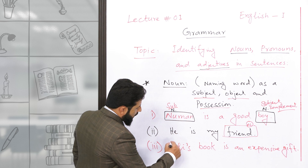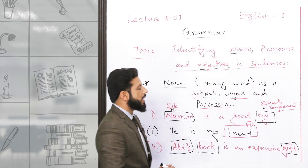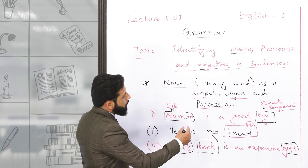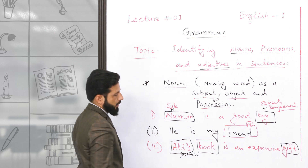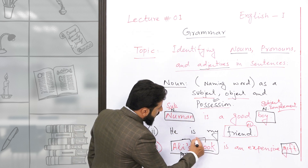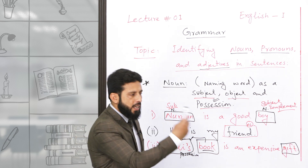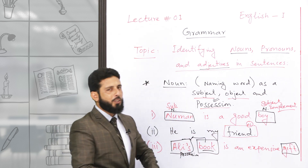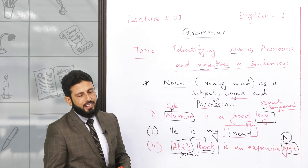تیسرے sentence کو دیکھیں: 'Ali's book is an expensive gift'۔ اس sentence میں تین نام ہیں: Ali، book اور gift۔ Ali ایک proper noun ہے اور یہ possessive case کے لیے استعمال ہوا ہے۔ Book اس بندے کی ملکیت ہے۔ Gift بھی noun ہے اور یہ subject complement کے طور پر استعمال ہوا ہے۔